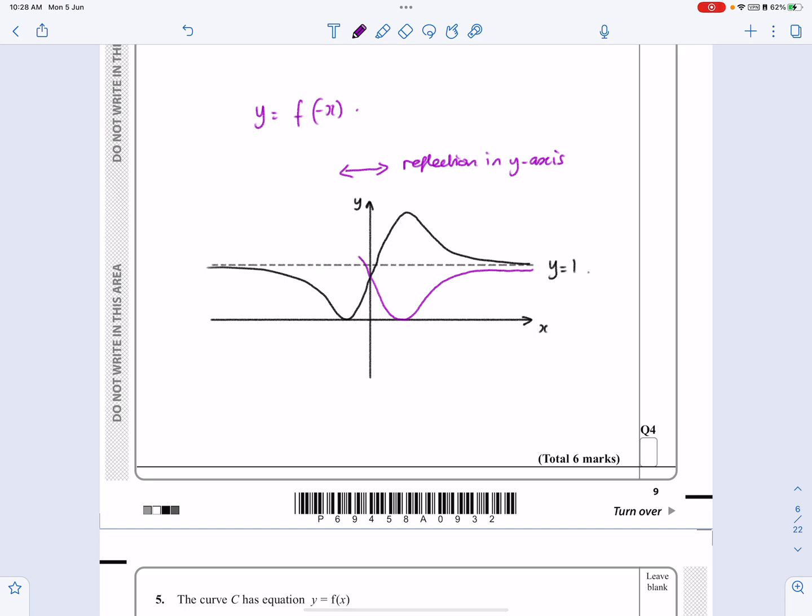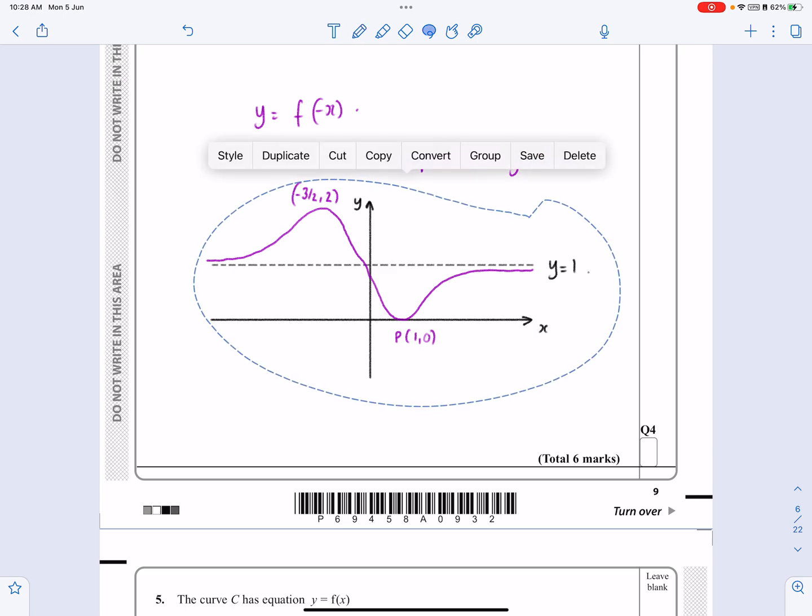So again, just trying to make it relatively neat. So the idea is that those two are the same height and are the same distance away from the axis. These are the same distance away from the axis. Well, I don't need to rely on my drawing skills because, as with the last one, what they're now going to ask me for is what these new values are. So the value for P was minus 1, 0 before. So that's going to be 1, 0. The value for the maximum is now minus 3 over 2, 2. And the equation of the asymptote is going to stay at y equals 1.